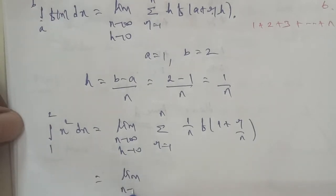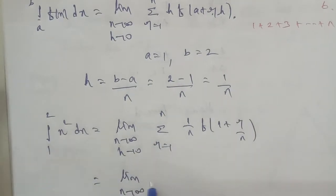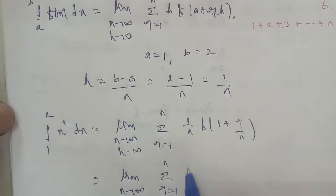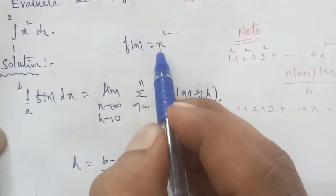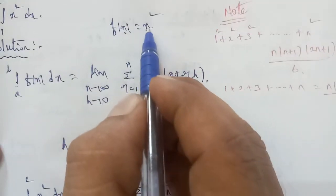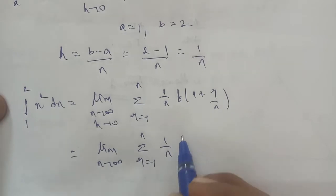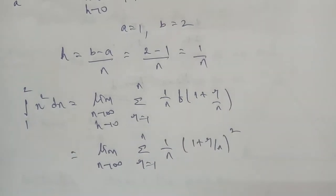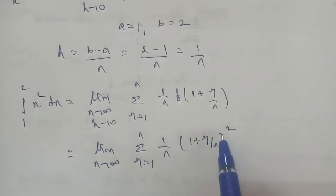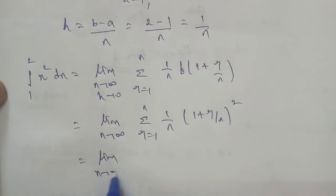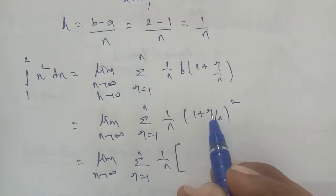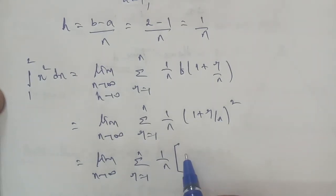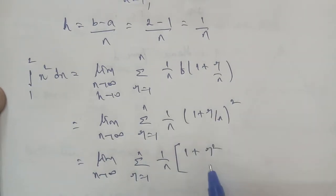Again, limit n to infinity, in the expression, h is equal to 1 by n. Next, f of x is equal to x squared, so f of a plus rh is f of 1 plus r by n, which equals 1 plus r by n, the whole squared.